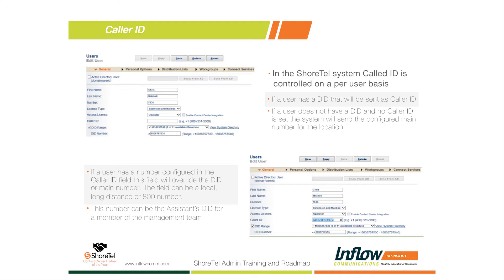As you can see in my first screenshot, my DID ends in 7535, and that is my caller ID because my caller ID field is blank. Two lines above the DID is the caller ID field — if that field is blank, the system will use the DID. If both the caller ID field and the DID field are blank, the user won't have a caller ID set, and when placing an outbound call the ShoreTel system will populate one automatically.